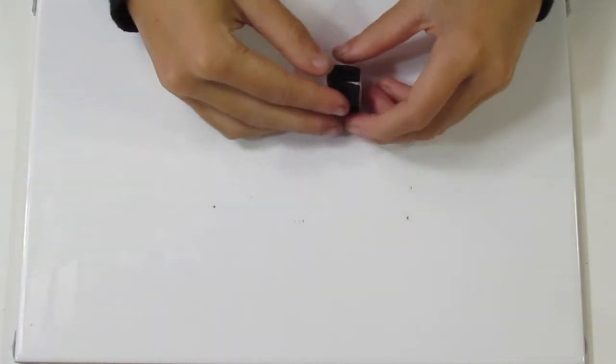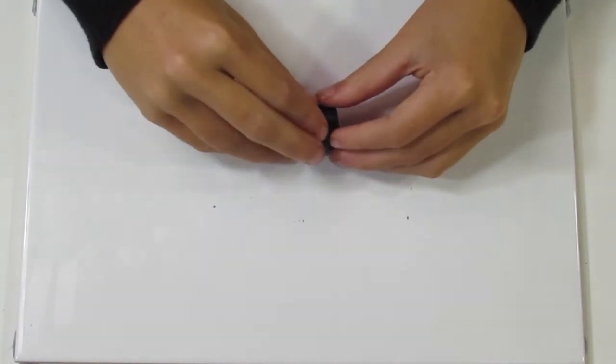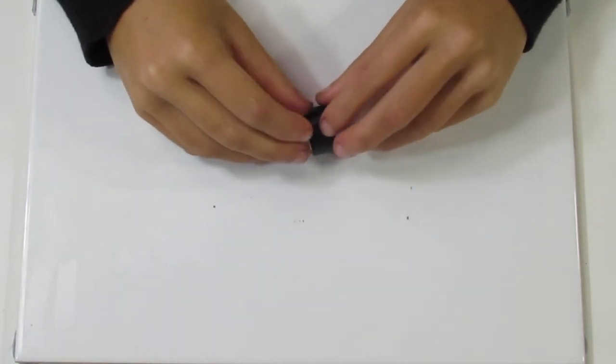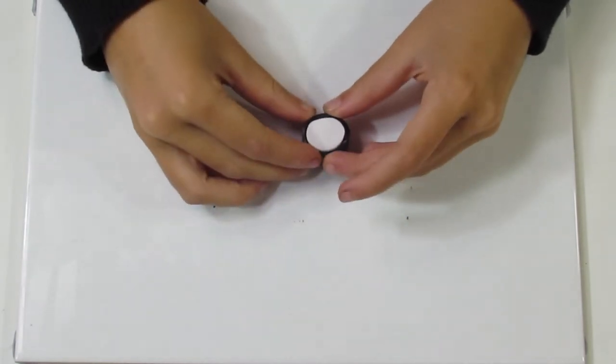So I'll do that. Then what you can do is you can just press it into place and this way you'll have a nice even border.